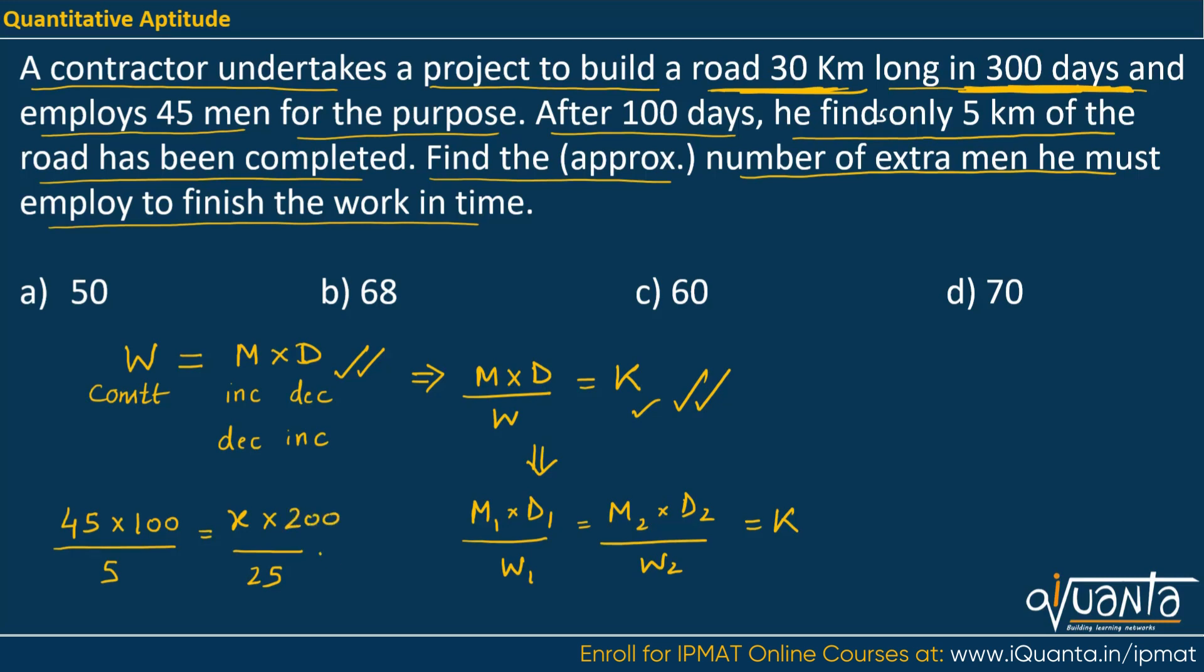So if you calculate the value of X from this relation, X would be equal to, this will be 5, this will be 40, this will be 2.5. So value of X will be 45 into 2.5 that gives us 112.5. So this is the total number of men who will work for 200 days to build the 25 kilometer of the road remaining.